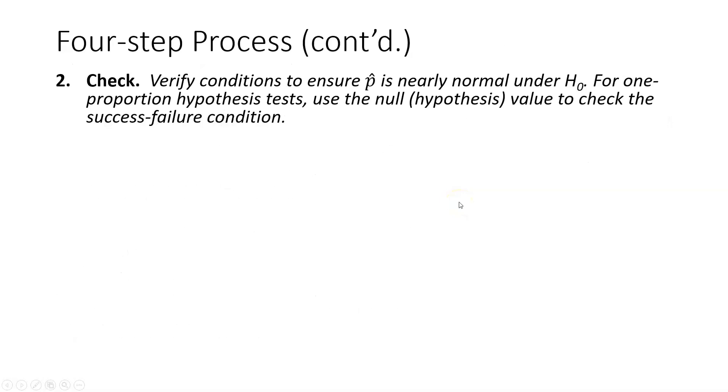Moving on to step two, we're going to check the two conditions to ensure that the sampling distribution of sample proportions is nearly normal under the null hypothesis. It's important to stress that we're using the null hypothesis for values that we need for these condition checks. For one proportion hypothesis tests, we're going to use the null value of 0.5 for this example to check the success-failure condition.